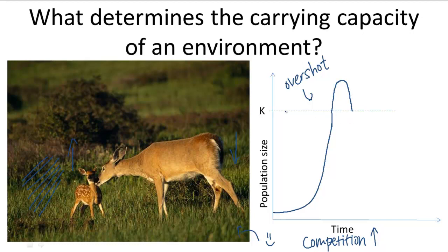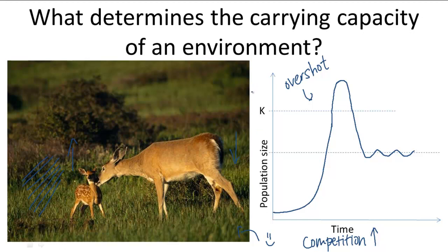The population doesn't just return back to the original carrying capacity level, because now there's a new carrying capacity. It plummets down to this new carrying capacity and starts to fluctuate around there. That's because so much damage has been done to the grass by the deer from overgrazing that there is not the same amount of grass as before. So the original carrying capacity is rendered obsolete, and there's a new carrying capacity to reflect the new amount of grass.